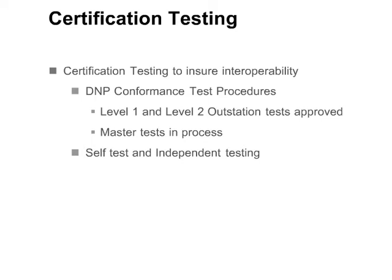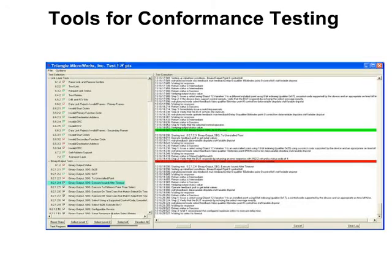The D&P3 conformance test procedures are currently approved for subset Level 1 and subset Level 2 outstations. Conformance tests for master stations are currently under development. Vendors may self-test their devices, or they may have an independent test lab perform the conformance tests. The D&P user group website lists devices and their certification status. An end-user may opt to specify that self- or independent testing is required of the equipment used in their networks. The Triangle Microworks Communication Protocol test harness supports an optional module that automates the conformance test procedure. This screenshot shows an example of this module, with individual tests shown down the left and the right-hand column showing the current status of the testing.